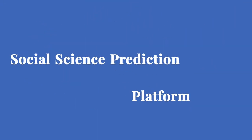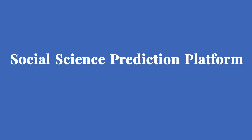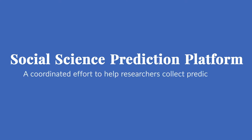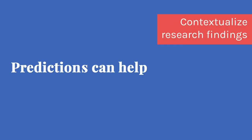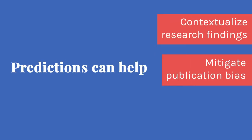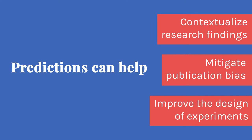The Social Science Prediction Platform is a coordinated effort to help researchers collect predictions of social science results. These predictions can help contextualize research findings, mitigate publication bias, and improve the design of experiments.